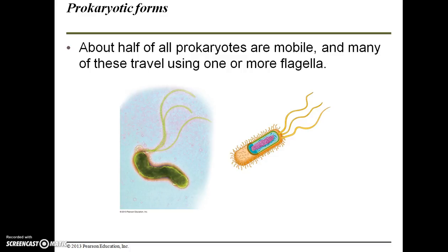About half of all prokaryotes are mobile, and many of these travel using one or more flagella — extensions of the cell that aid in movement. These structures are not unique to prokaryotes; human sperm cells are eukaryotic and they also have a single flagellum.